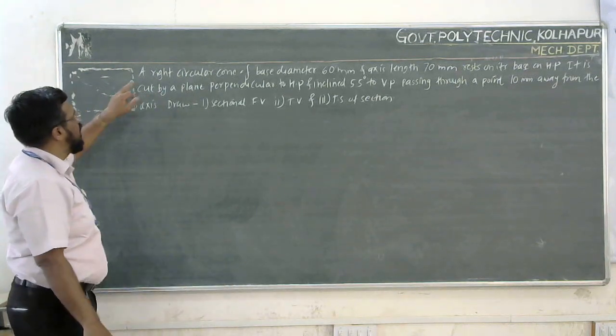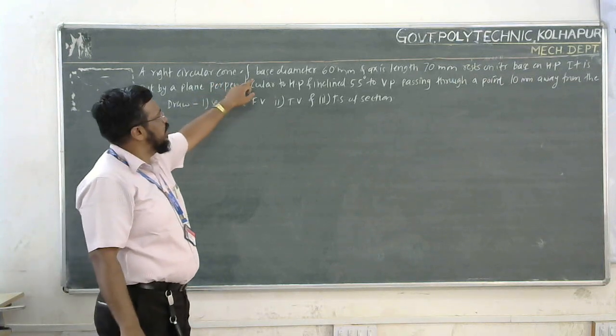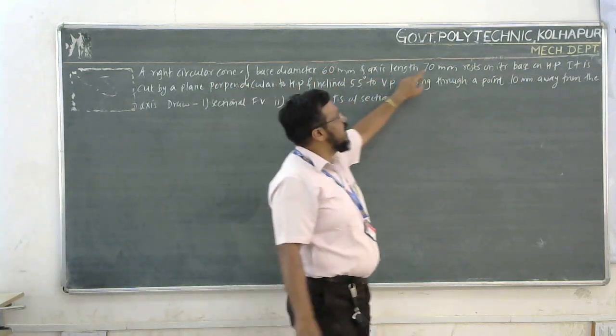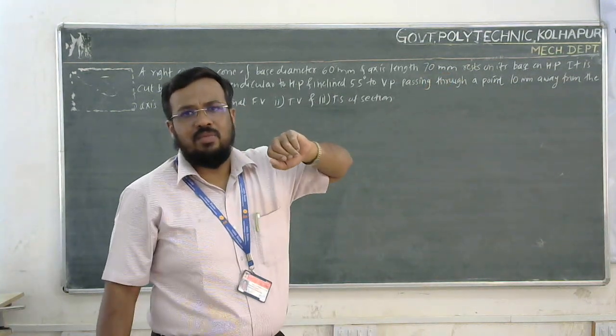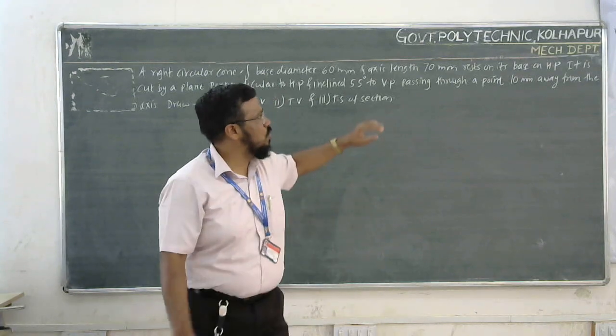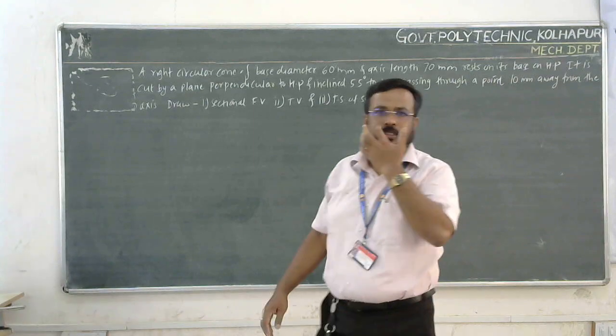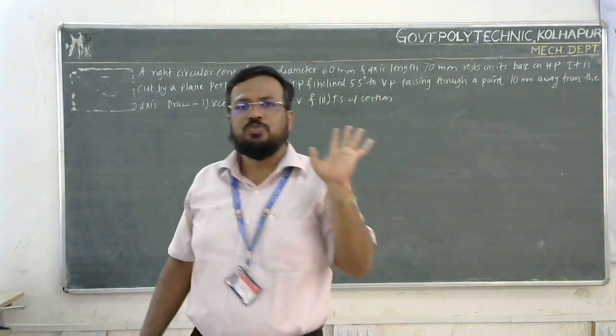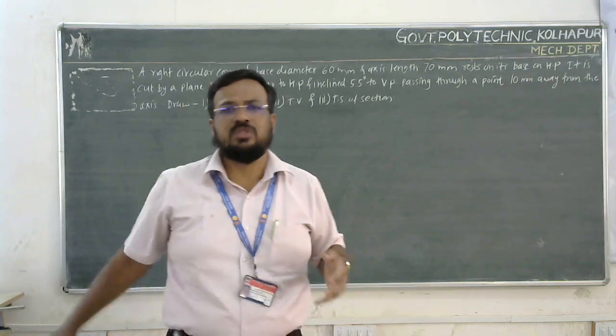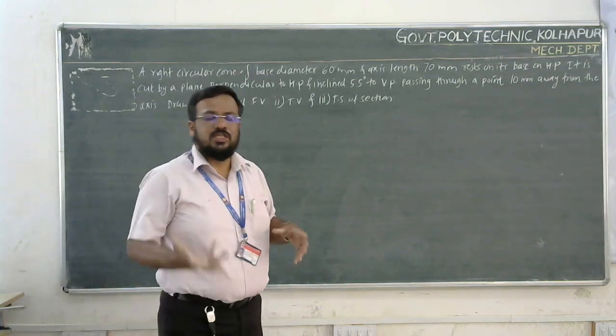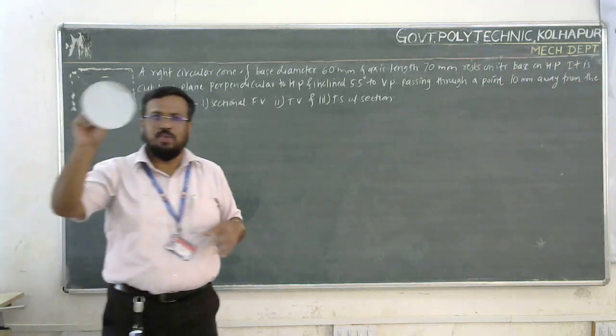I will read the statement of the problem. The right circular cone has base diameter 60 mm and axis length 70 mm. It rests on its base.